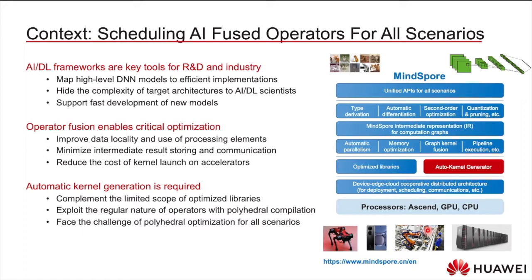Typically, AI frameworks receive as input datasets and models in the form of computation graphs, where each node receives tensors, makes computations on them, and produces tensors. During compilation, the graph goes through many passes — some architecture-independent, like type derivation and automatic differentiation, and some architecture-dependent, like automatic parallelization that achieves data and computation partitioning for different computing nodes.